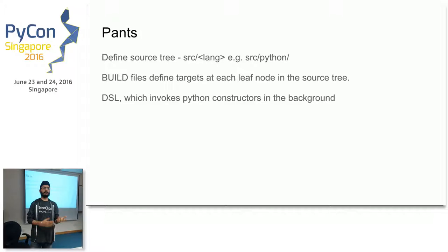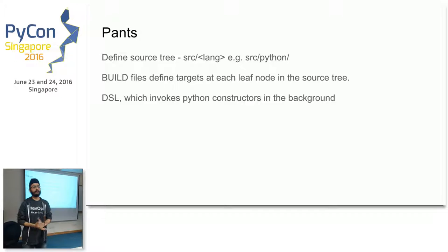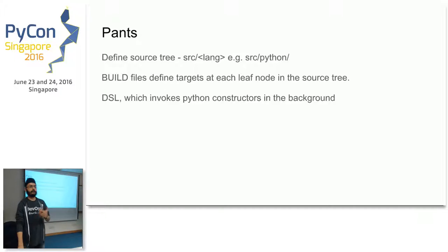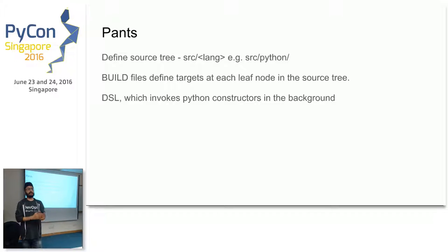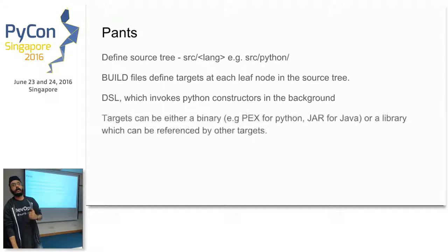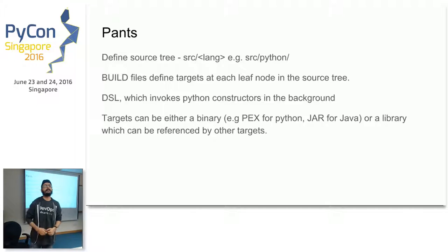Build files are written in a specific DSL that looks very similar to Python — simple, with basic functions that invoke Python constructors in the PANTS project. When we talk about targets: a service is a process that starts from a binary. Or a target can be a library which can be used by other targets. So targets can either be a binary or a library that can be referenced by other targets.